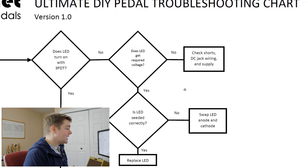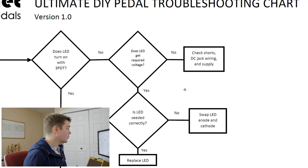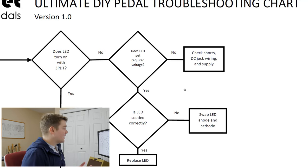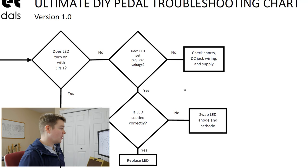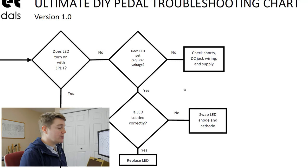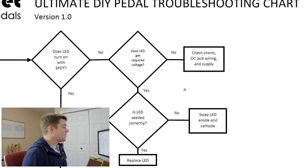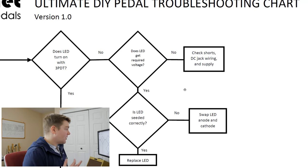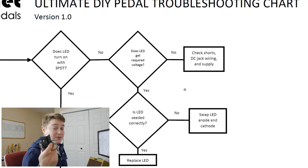If the LED doesn't light up, the first thing we need to do is remove the back of the pedal and make sure the LED is getting the required voltage. In most cases that's going to be somewhere around 9 volts — 9 volts through your current limiting resistor, so a little bit less than 9 volts. Some pedals run off 18 volts, so keep that in mind. If we don't get the required voltage, then you have a supply issue — either your supply is getting shorted, there's something wrong with your DC jack wiring, or your supply might be broken.